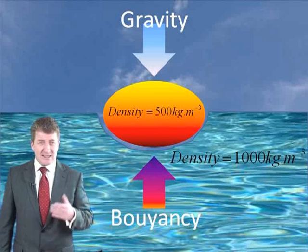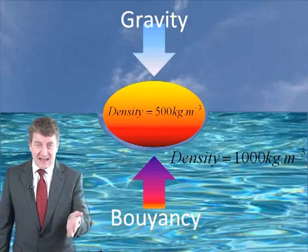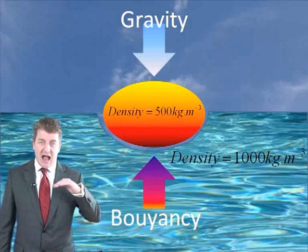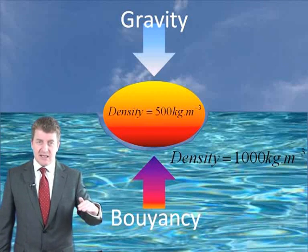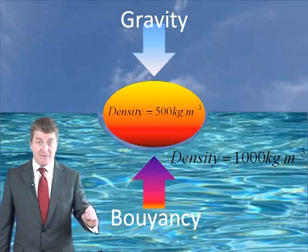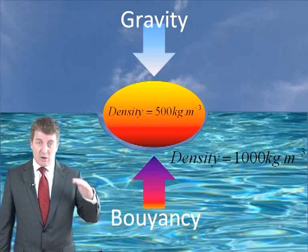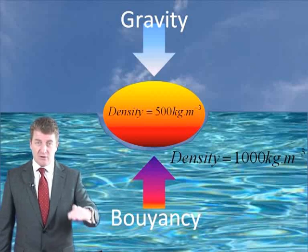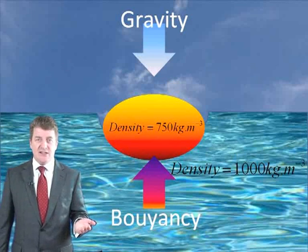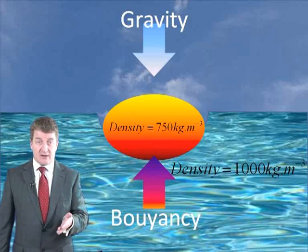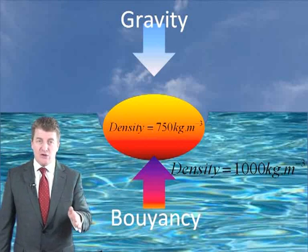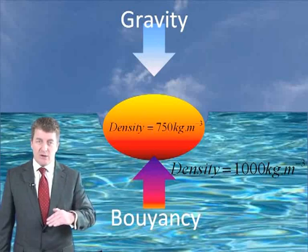Because the object's density is half of the density of water, it will only displace half of its volume, as you can see here. Now what if the density of the object was 750 kilograms per meter cubed? It would displace three quarters of its volume.